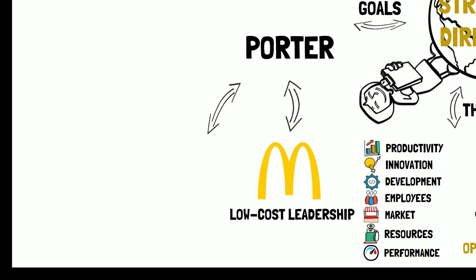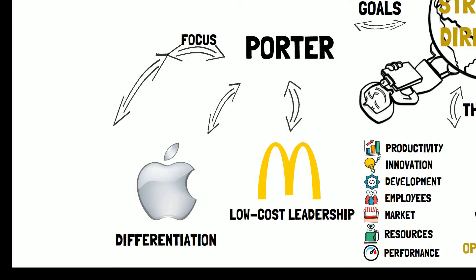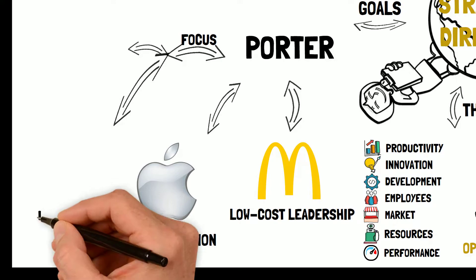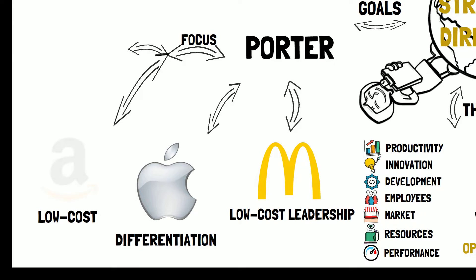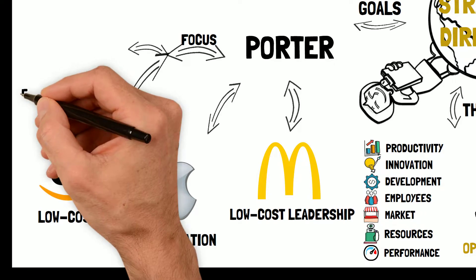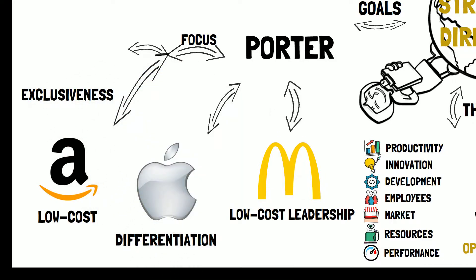Secondly, differentiation. The concept stresses the importance of being unique in relation to others. For example, the computer company, Apple. Third and last, focus. With the intention of pinpointing a specific group or market, the focus as a competitive strategy can be divided into two subgroups, referring to the other two concepts by either low-cost, for example the e-commerce tech company Amazon, or differentiation, for example the supercar manufacturer Koenigsegg.